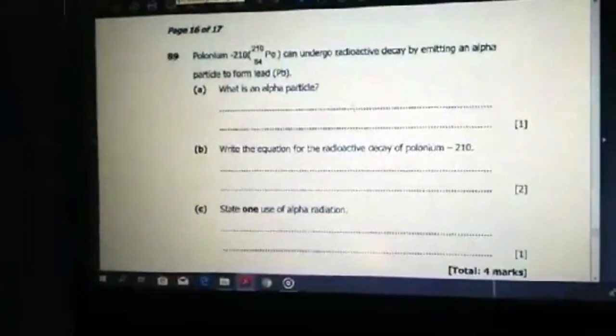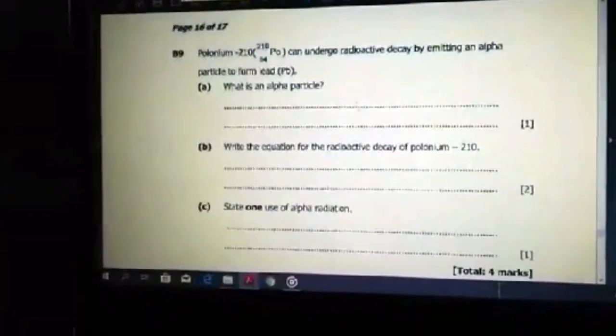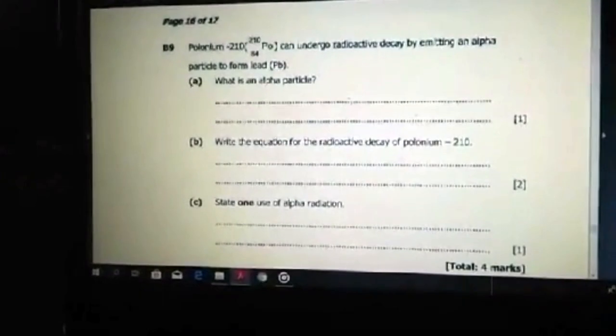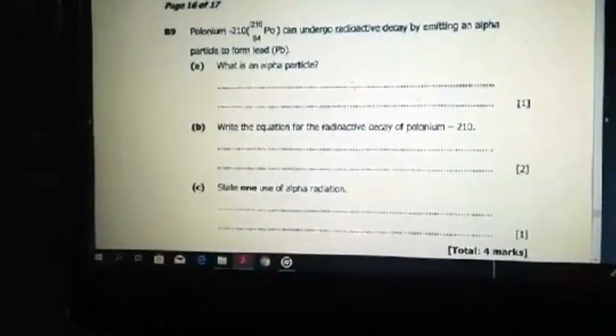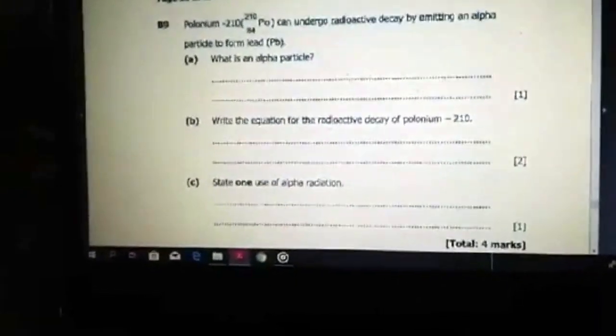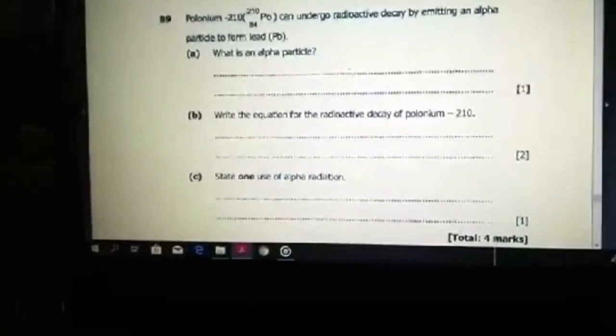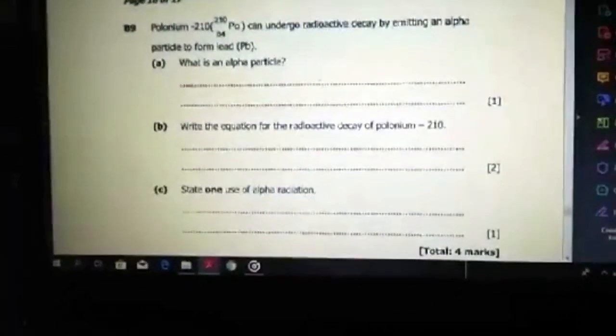We go to question 9. Polonium can undergo radioactive decay by emitting an alpha particle to form lead. What is an alpha particle? An alpha particle is a radioactive particle that is released, and it is helium in nature with a very strong ionizing effect.